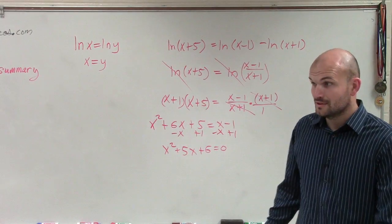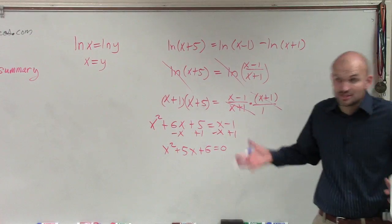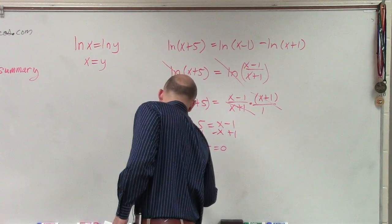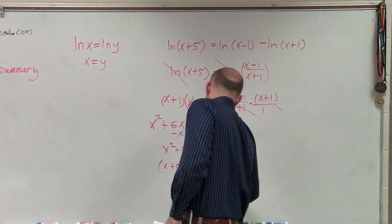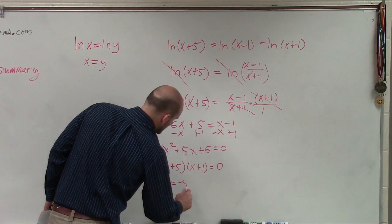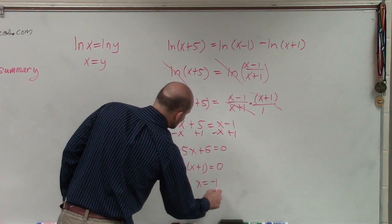So now I need to solve for x. That's the question. Solve for x. So x plus 5 times x plus 1 equals 0. Therefore, my solutions are x equals negative 5 and x equals negative 1.